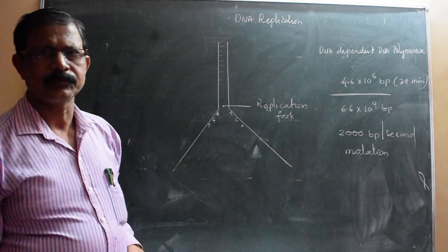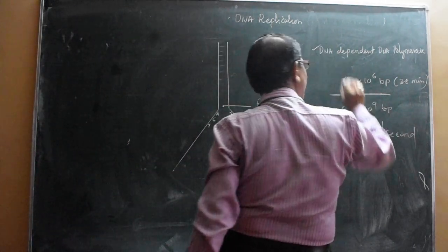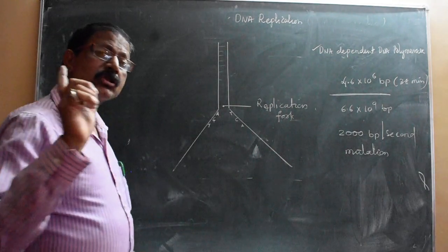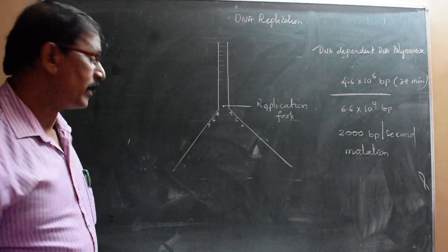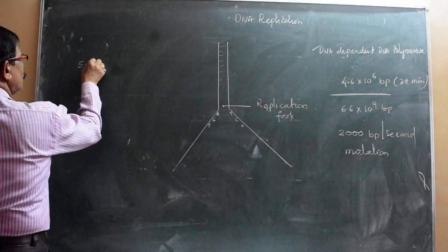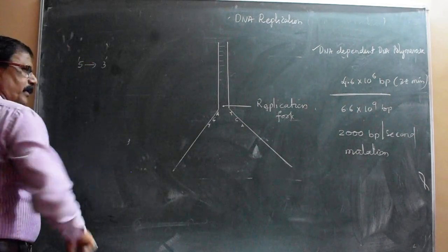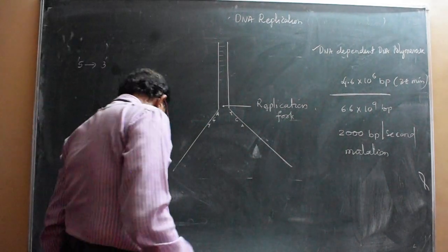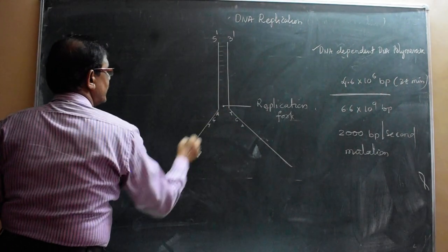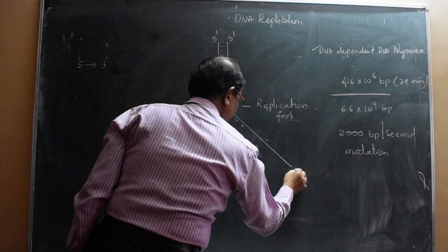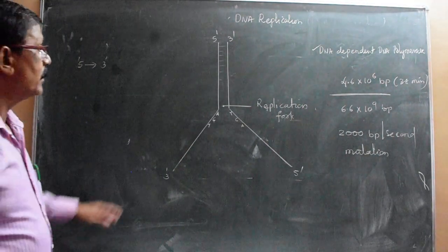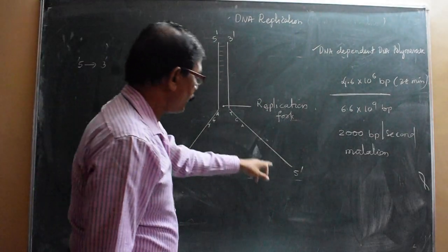The hydrogen bonds break and the DNA strands become separated. Now the DNA-dependent DNA polymerase starts the process of polymerization. The polymerization always occurs in the direction called 5 prime to 3 prime - always in the direction of 5' to 3'. For example, this is 5 prime, this is 3 prime on one strand, and this is 3 prime and this is 5 prime on the other.